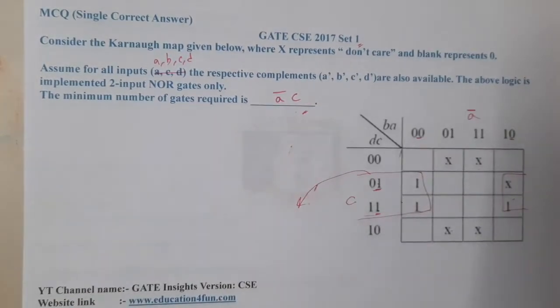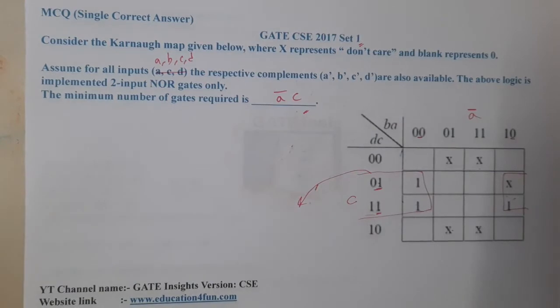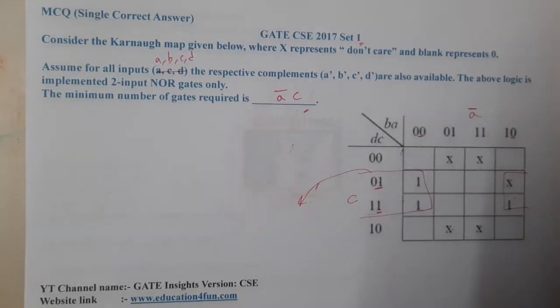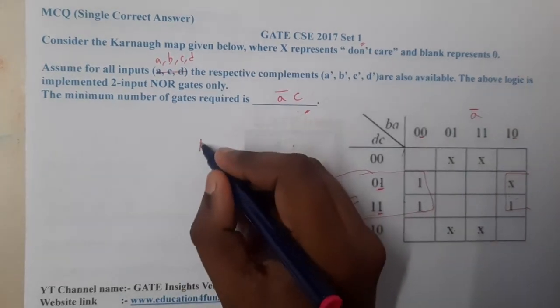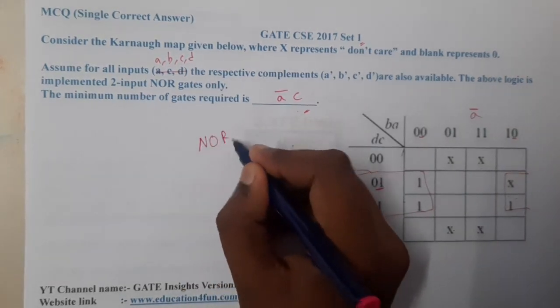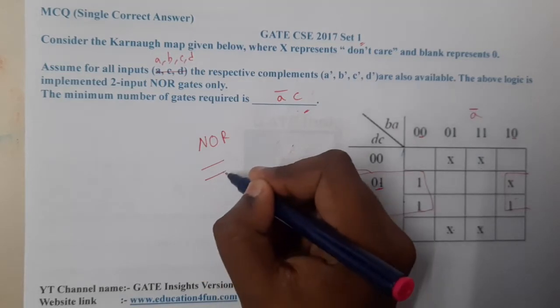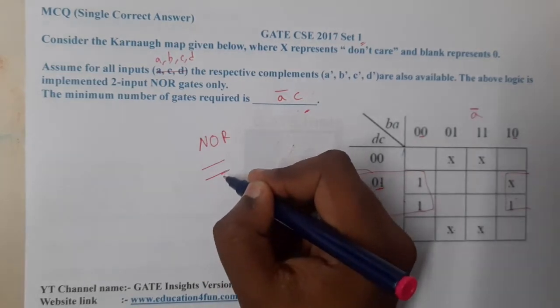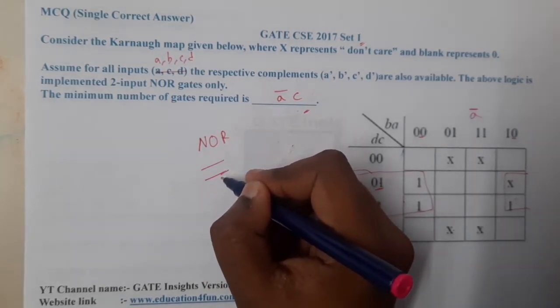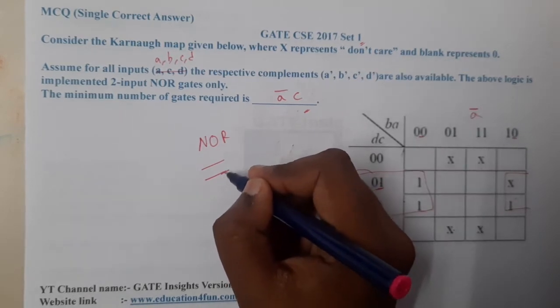But our requirement is: how many NOR gates are needed to solve this? That is the question. So what exactly is a NOR? NOR is nothing but—how will it look? If you recall, it is a NOT. Just give me a second. It is a NOR.